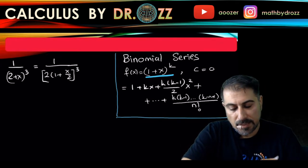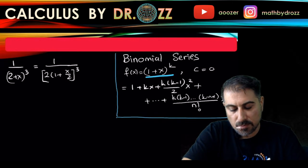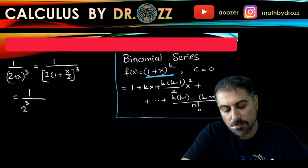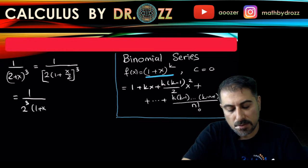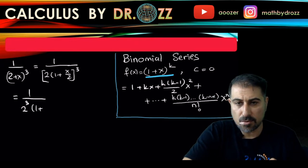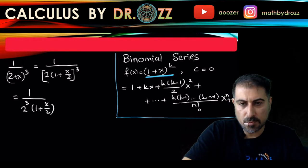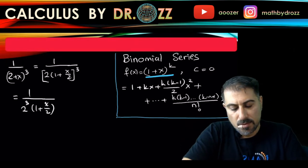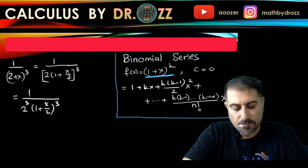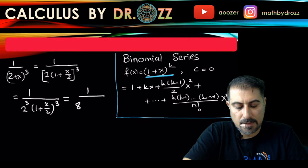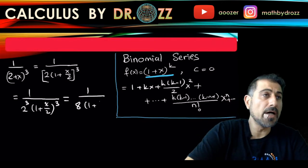This implies that this is 1 over 2 cubed times (1 + x/2) quantity cubed. That should be equal to 1/8 times (1 + x/2) quantity cubed.